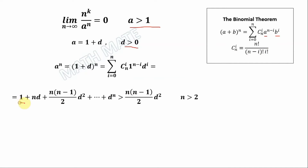After that we put i equal to 1, so we have n factorial divided by n minus 1 factorial. Since n factorial equals n multiplied by n minus 1 factorial, we cancel the factorials and remain with only n divided by 1, multiplied by d to the power of 1.